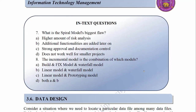In-text questions: Number 7 — What is the spiral model's biggest flaw? A. Higher amount of risk analysis, B. Additional functionalities are added later on, C. Strong approval and documentation control, D. Does not work well with smaller projects. Question 8 — The increment model is a combination of which models? A. Build and fix model and waterfall model, B. Linear model and waterfall model, C. Linear model and prototyping model, D. Both A and B.